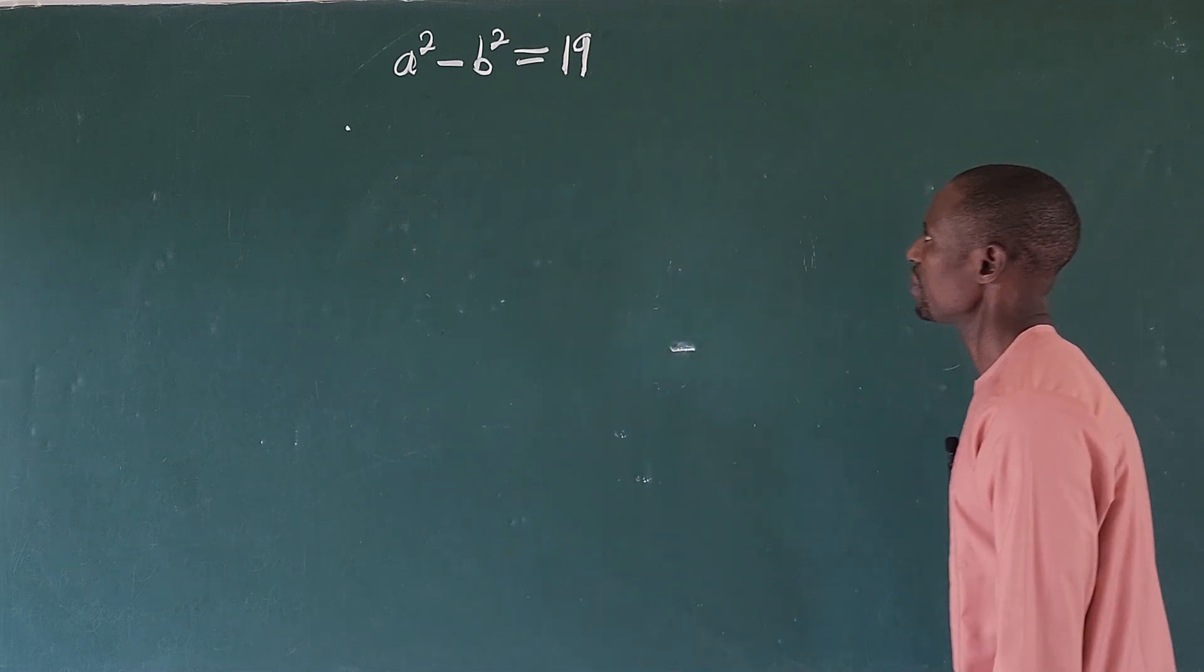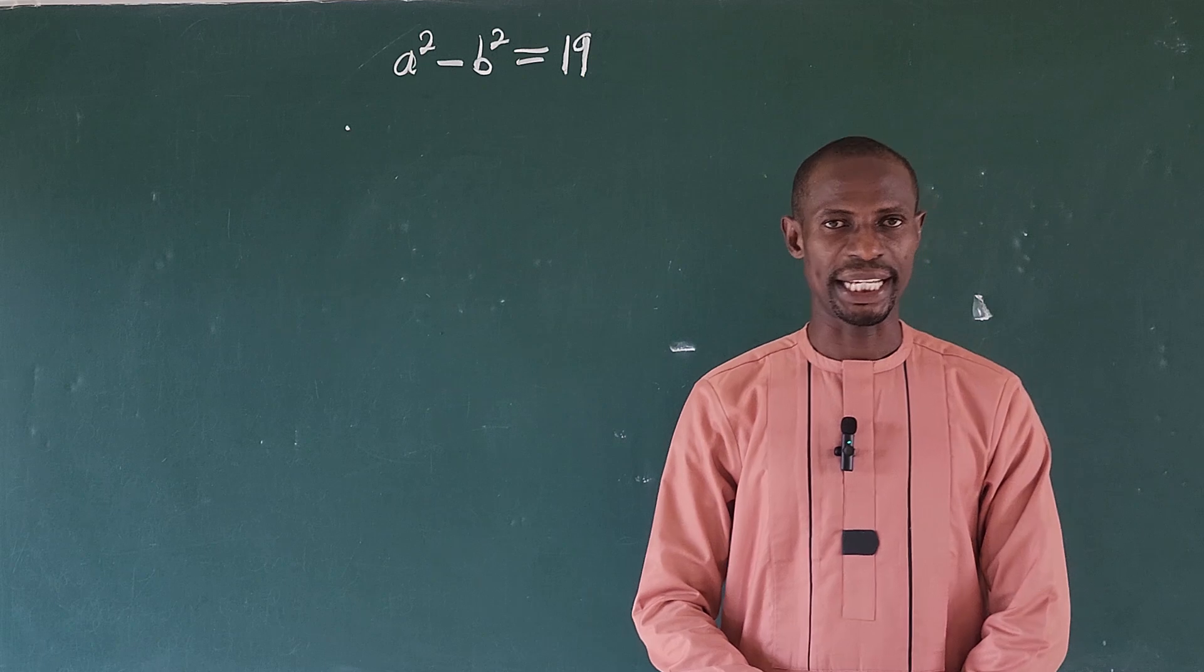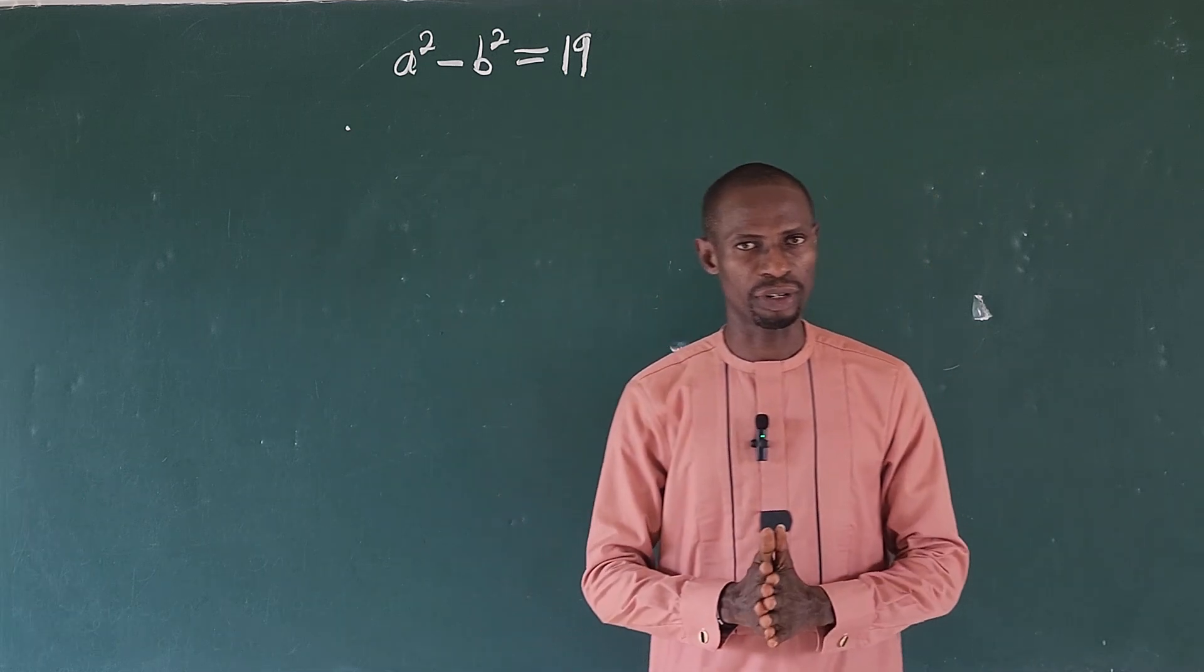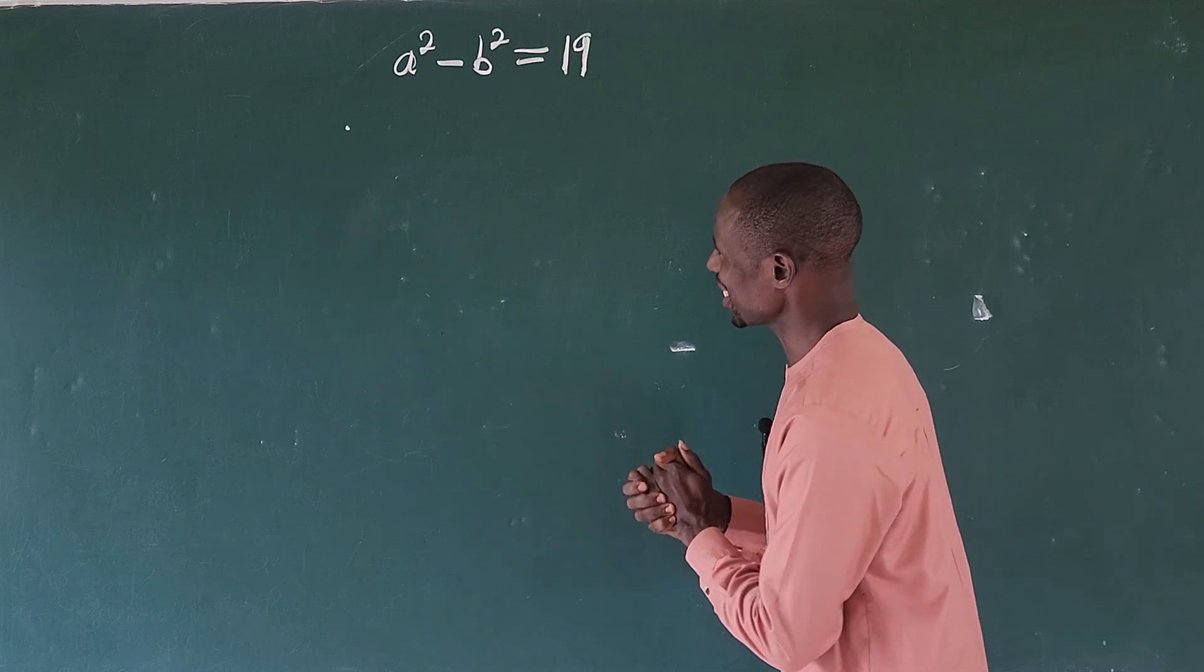Welcome to today's class. Today we have a² - b² = 19. Here we are asked to look for a pair of solutions or roots that satisfy this equation.